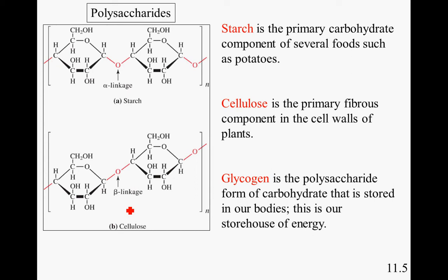Starch is the primary carbohydrate component of several foods such as potatoes. Cellulose is the primary fibrous component of cell walls of plants. Glycogen is a polysaccharide form of carbohydrate that is stored in our bodies — this is our storehouse for energy. We humans are able to digest starch, but we lack the enzymes to digest cellulose.